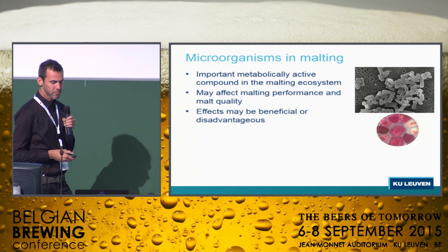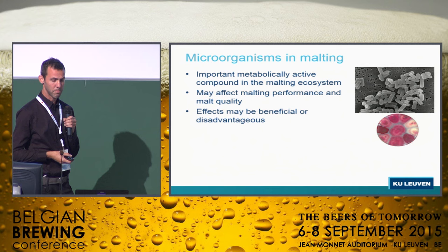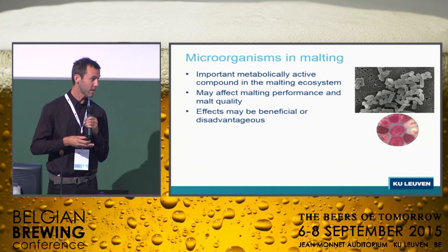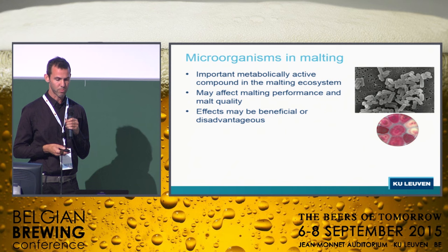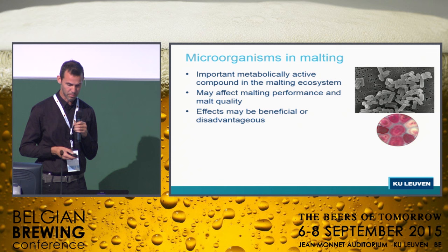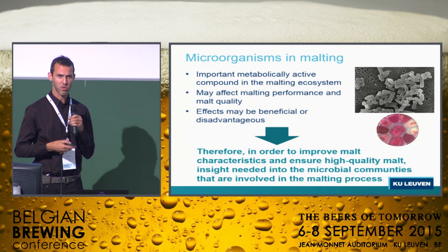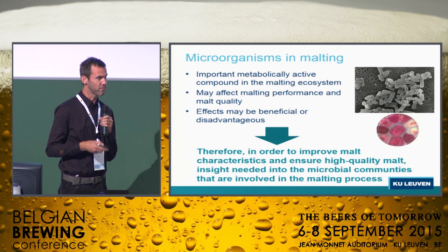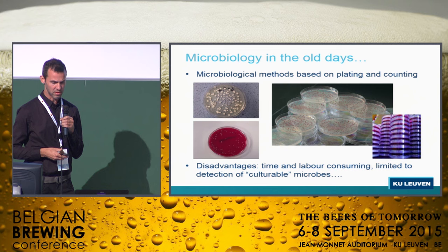Now we're going to talk about the microbes in malting. Microbes have an important function during malting next to the grains. These microbes can affect the malting performance and the malt quality in the end. These effects can be beneficial or disadvantageous. Beneficial effects include enzymes that are produced. Harmful microbes also exist — they can spoil the grain or even the malt. So it's important to know which microbes are there and what they are doing, to improve malt characteristics and ensure high quality malt. We need more insights into the dynamics of the microbial communities involved in the malting process.